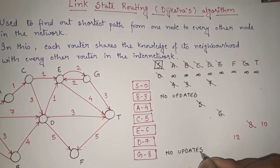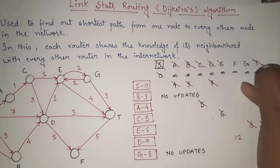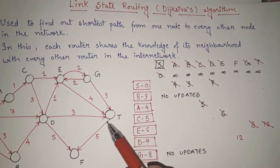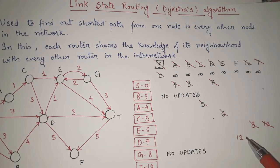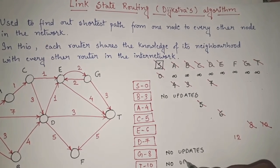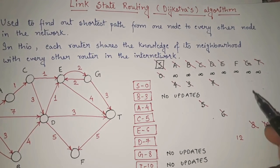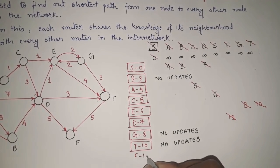Out of the remaining values — 12 and 10 — the minimum is 10. So I finalize T as 10. From T, I can go to F with cost 5: 10 plus 5 = 15, but F is already 12, which is less, so no update. Now only 12 remains, so I finalize F as 12. All nodes have been processed.